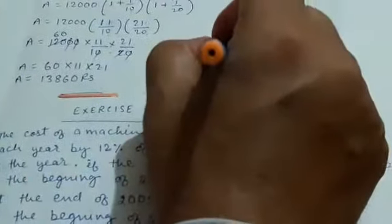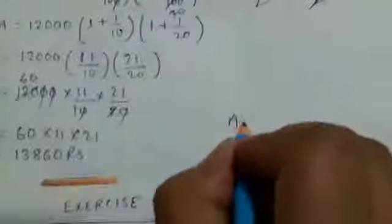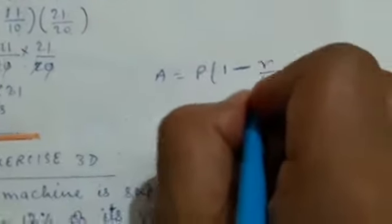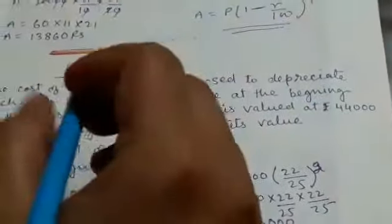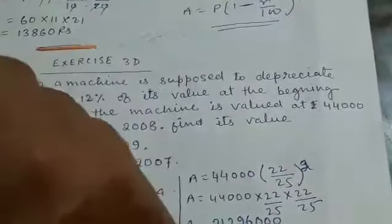So which formula will you apply for depreciation? We will apply the formula A is equal to P into 1 minus r by 100 to the power t. In the case of growth we use plus, but for depreciation we apply minus r by 100. This is our formula for depreciation. Now let us start this exercise.